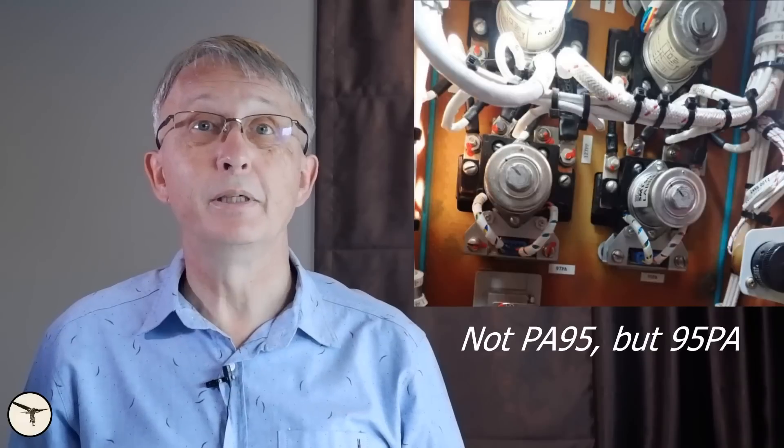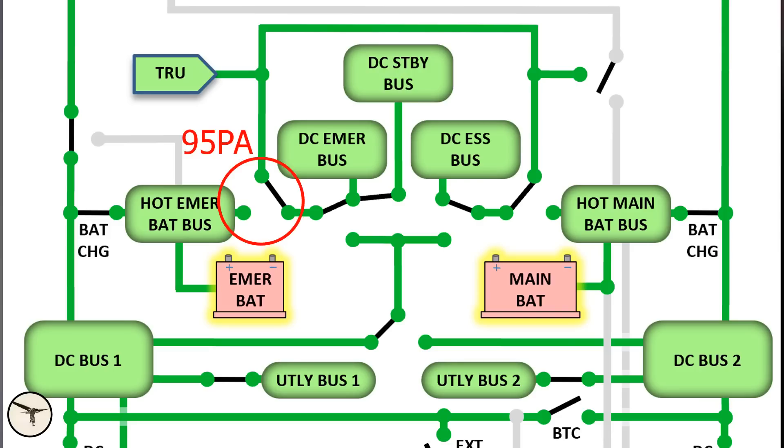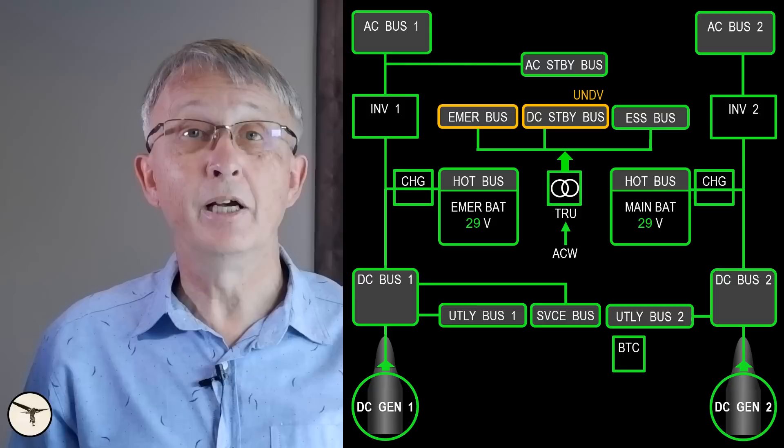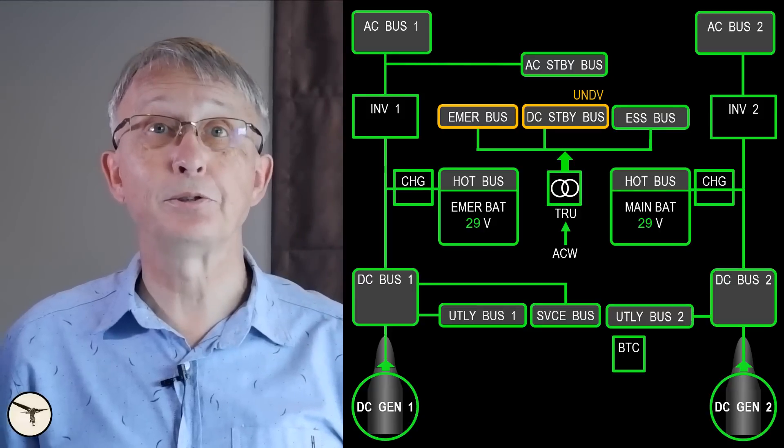The culprit was a contactor named PA95. It supplies electrical power from the TRU to the DC standby bus and DC emergency bus. It was determined that the contact plate inside the contactor was slightly off the limits. This error could have happened during production. The result was that the contactor could no longer make proper contact and power to the affected buses was lost.